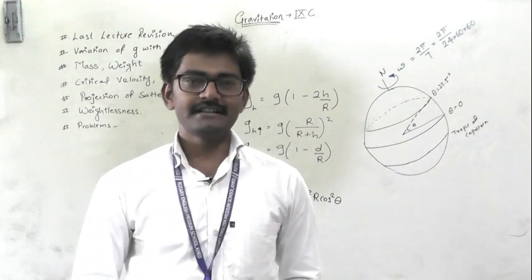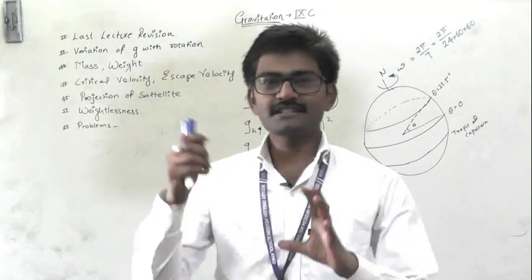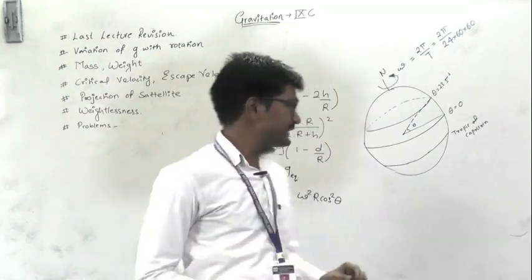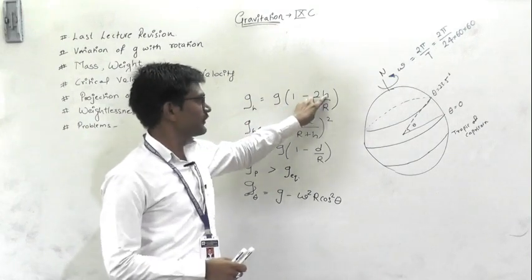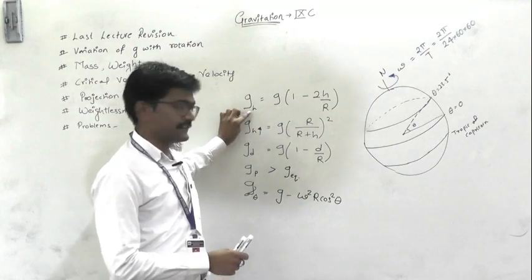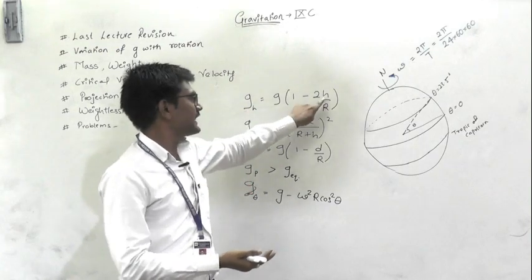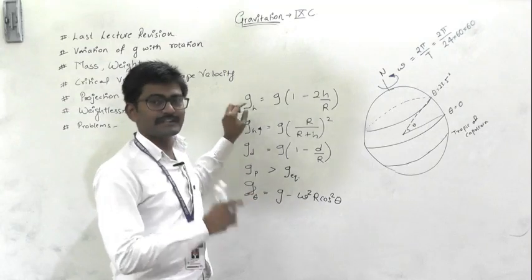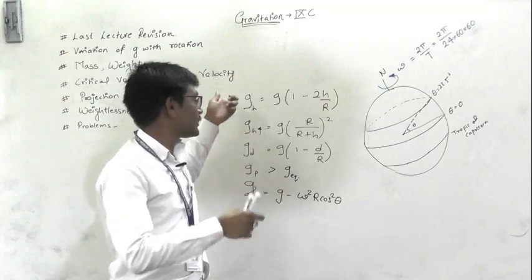Yesterday one point was remaining: the variation of small g with respect to rotation. Let us recap what we covered. The value of small g at a certain height is given by the formula using the surface value of g, the height h, and the radius r. For example, on Mount Everest, put that height, calculate g-h, multiply by your mass, and you get your weight at that height.